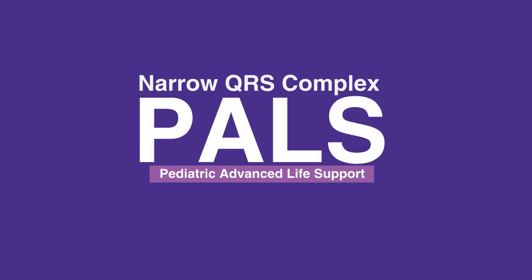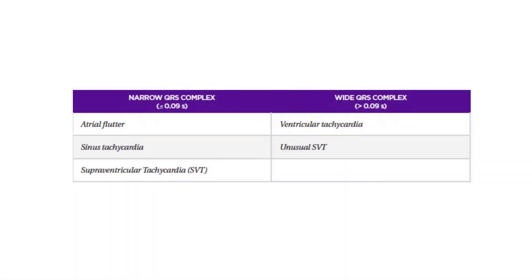Welcome to the lesson on Narrow QRS Complex. Pediatric tachyarrhythmias are first divided into narrow complex or wide complex tachycardia. In this video, we will discuss the narrow QRS complex tachycardias, which include atrial flutter, sinus tachycardia, and supraventricular tachycardia, or SVT.